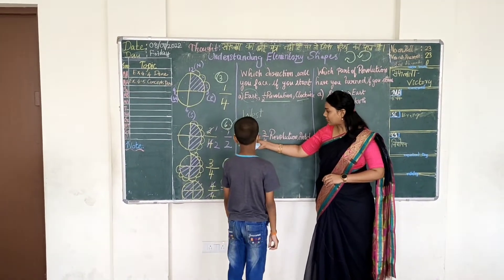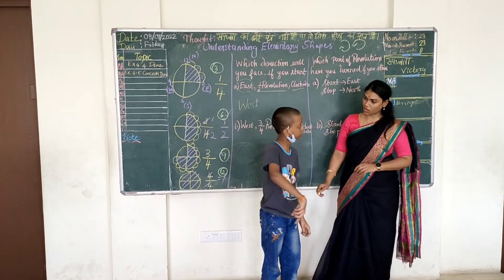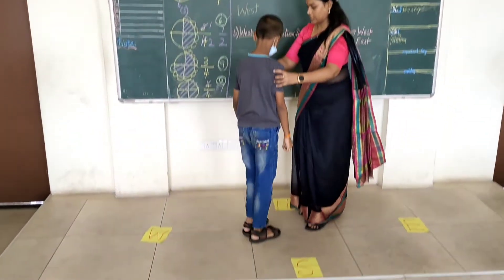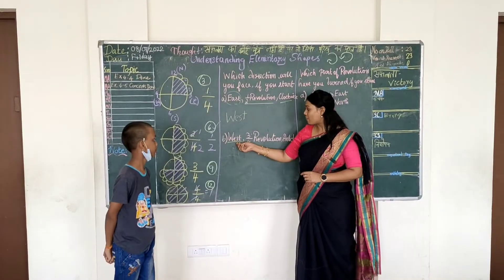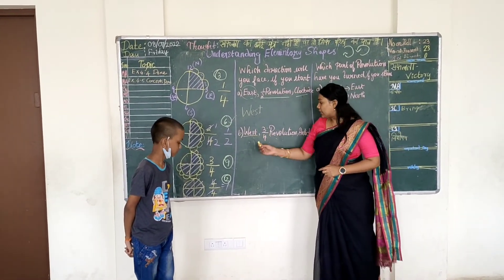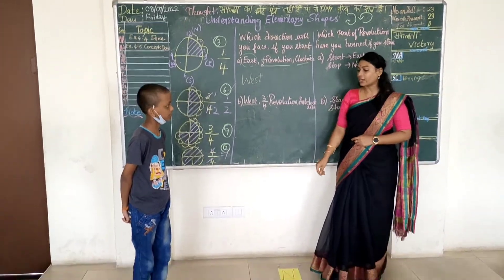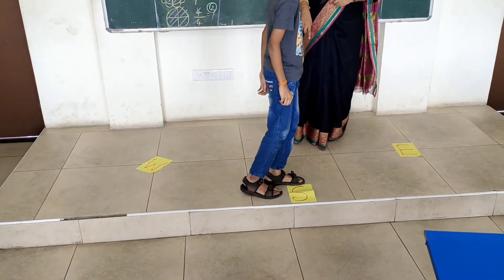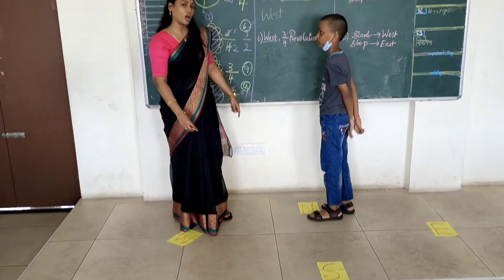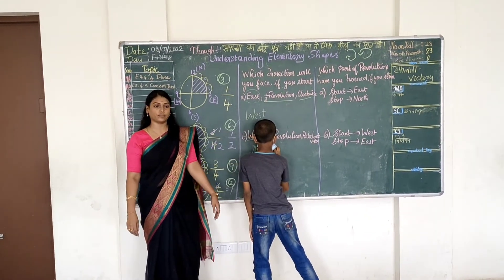Next: start at west and make a 3/4 revolution anticlockwise. Anticlockwise means the opposite direction of clockwise. 3/4 revolution means 9 turns. Praneet, start from west and move anticlockwise 9 times: one, two, three, four, five, six, seven, eight, nine. Where did you stop? North. Very good — Praneet started at west and stopped at north.